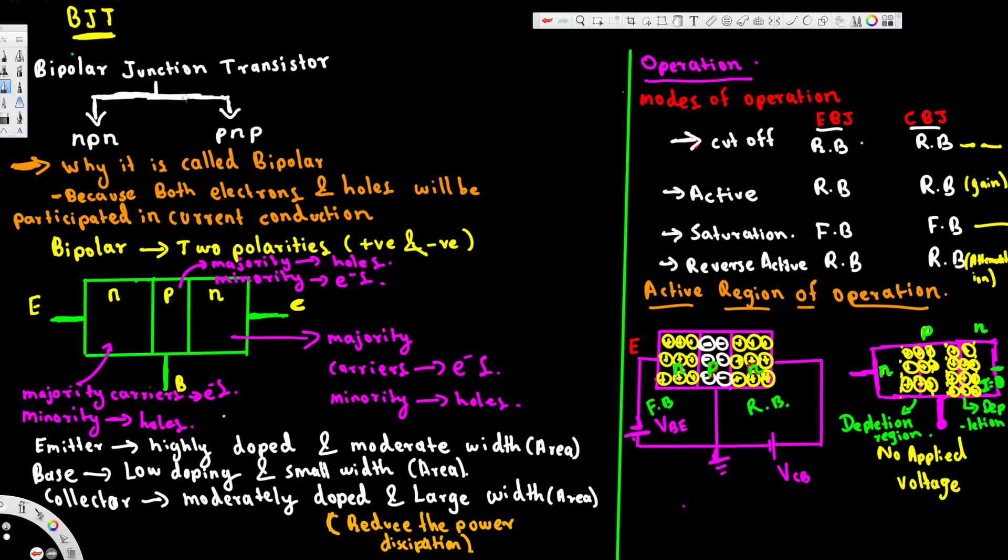What's going on guys? In this video we're going to take a look at bipolar junction transistors. There are two types of bipolar junction transistors: one is N-type, we call NPN, and P-type, PNP.